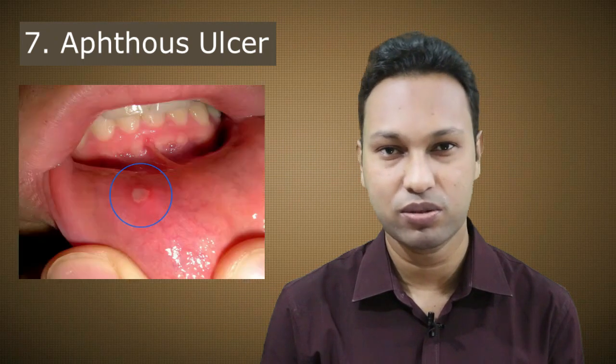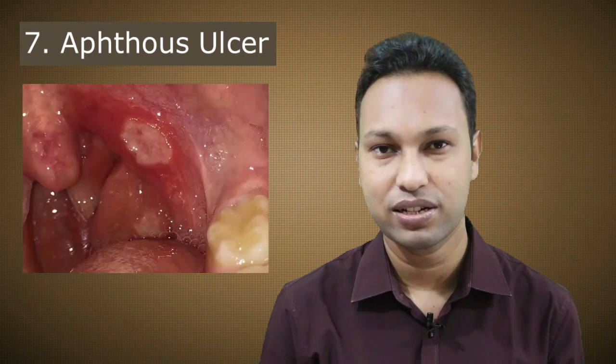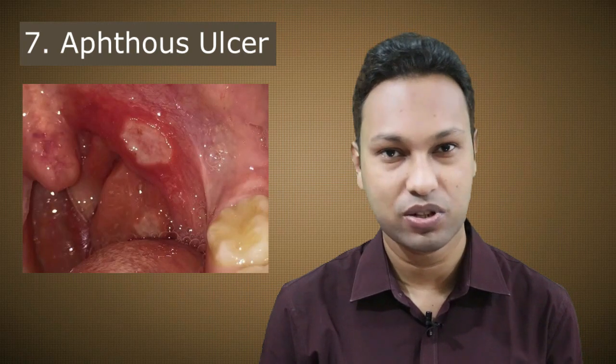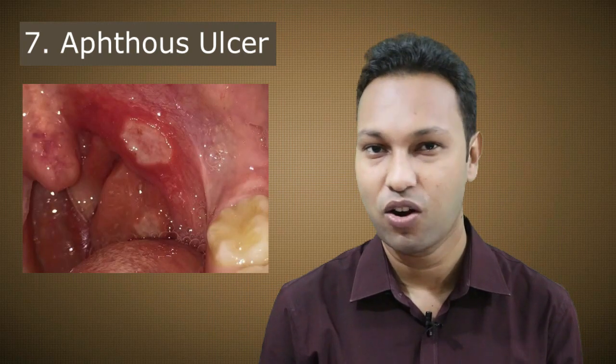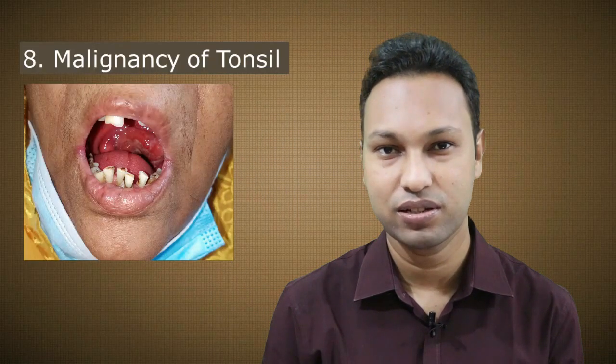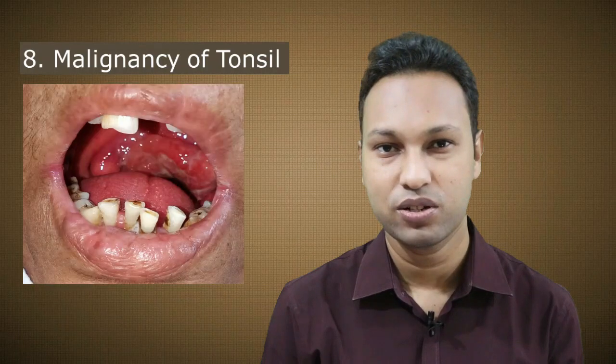Number seven etiology is aphthous ulcer. Aphthous ulcer is very, very painful. It usually presents over the movable mucosa of the oral cavity but can also present at the throat. It may be solitary or multiple. Number eight is malignancy of the tonsil. Tonsillar malignancy may be of two types: squamous cell carcinoma and lymphoma.